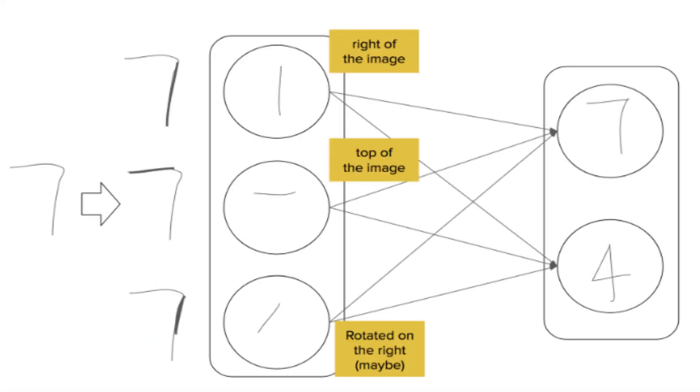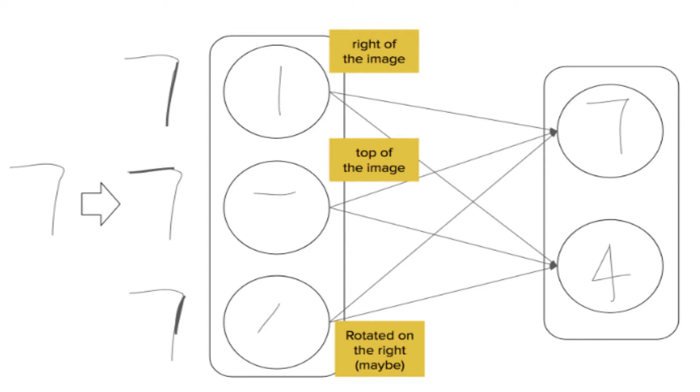The output is a vector consisting of the probability of observation and a pose for that observation. This vector is similar to what is done for example when doing classification with localization in CNNs.